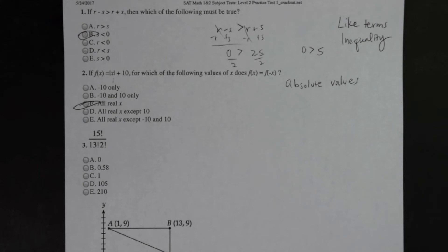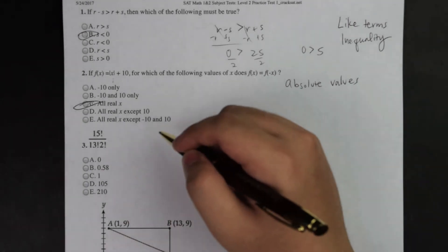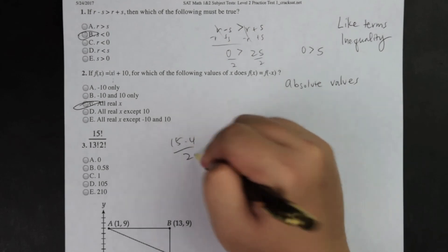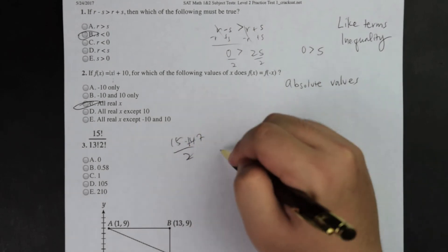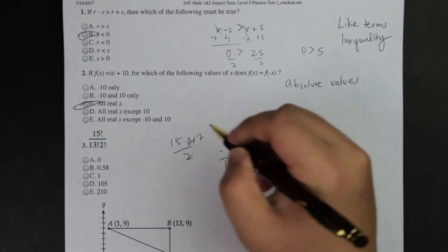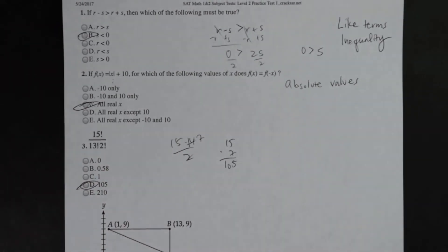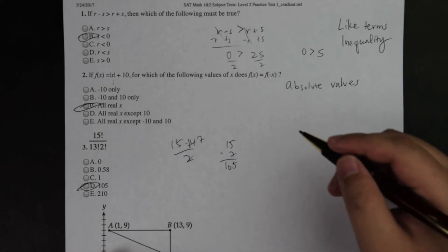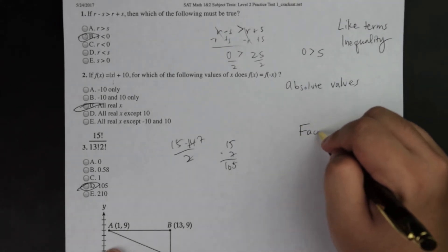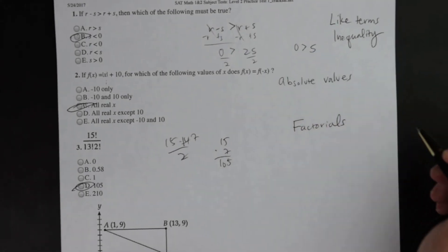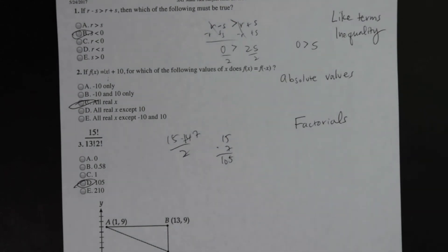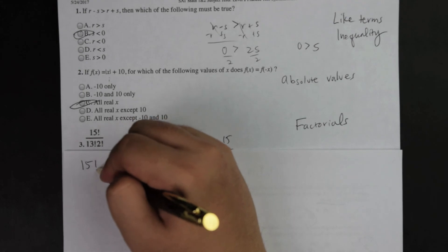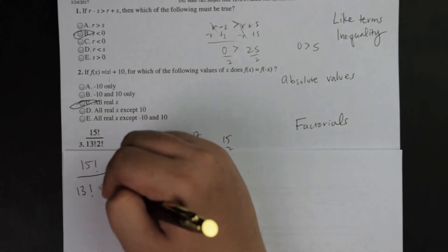Now to continue on to number three. For number three, my final answer is D. The concept behind number three is an idea called factorials. I do want to explain it on a separate piece of paper just because it's a concept you do want to know and make sure you understand. This factorial idea actually comes out a lot more commonly in statistics.